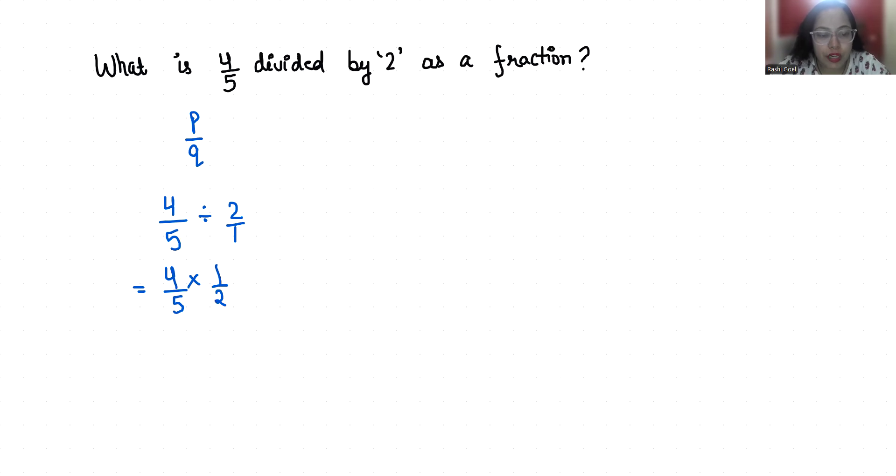So now if we multiply numerator with numerator it's 4 and denominator it's 10. So it is 4 by 10.